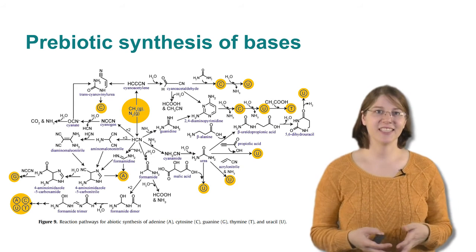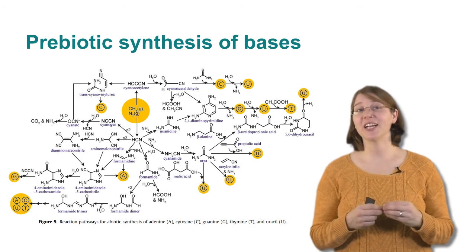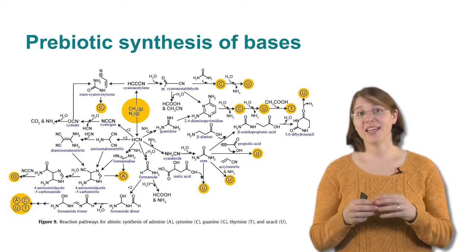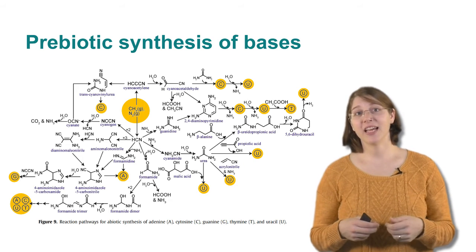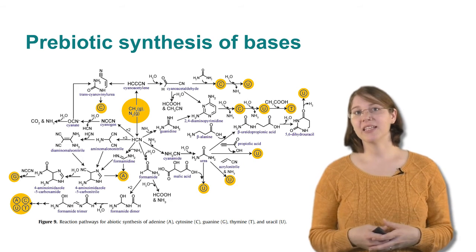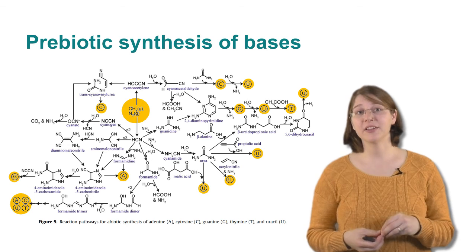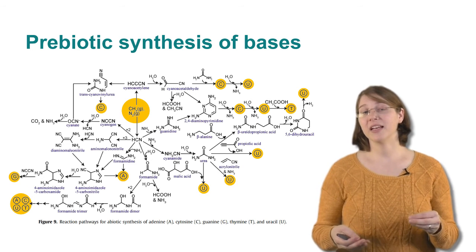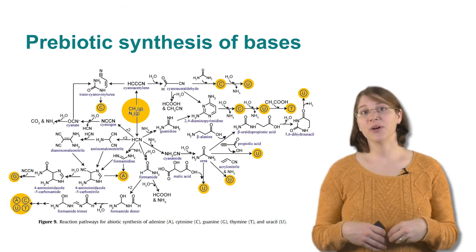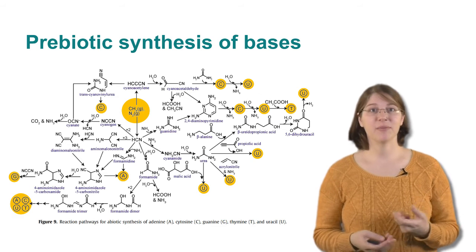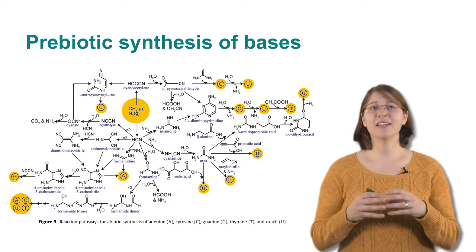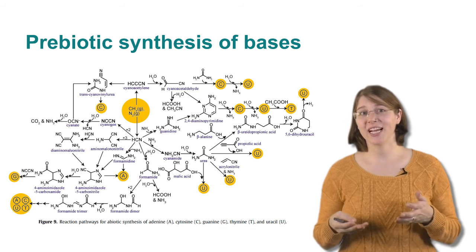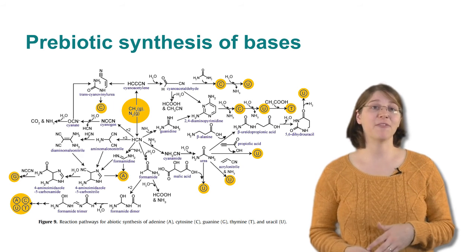In this synthesis, you can see that we start in the center with a methane, a CH4, and a nitrogen, N2. This methane and nitrogen can condense together to either form a cyanide or a larger carbon-nitrogen complex, which then goes through subsequent rounds of reaction to form our final bases, which are highlighted in the periphery in this yellow color.